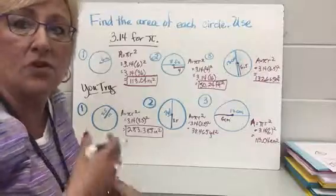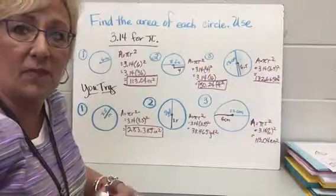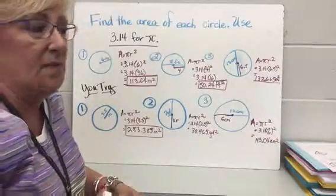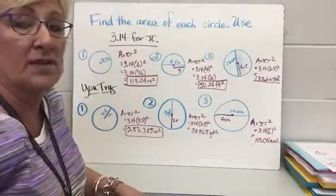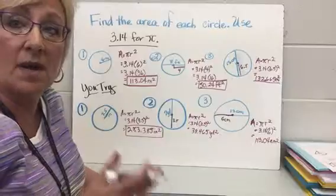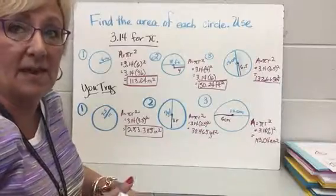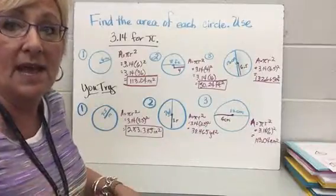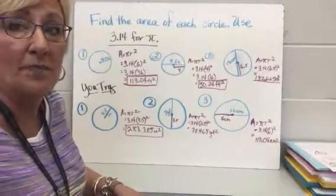All it is is just plugging in to the right formula. Make sure that if you've got a diameter you're halving it to find the radius, and when you're doing circumference make sure you're doubling the radius if you need to find the diameter. I'll see you tomorrow.